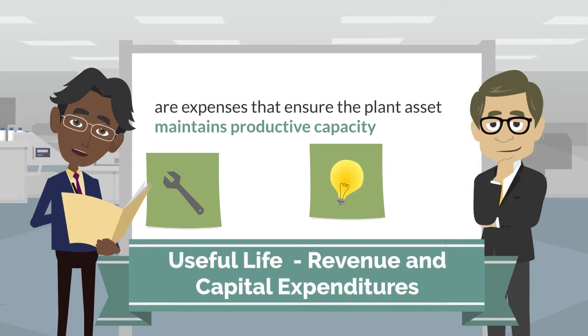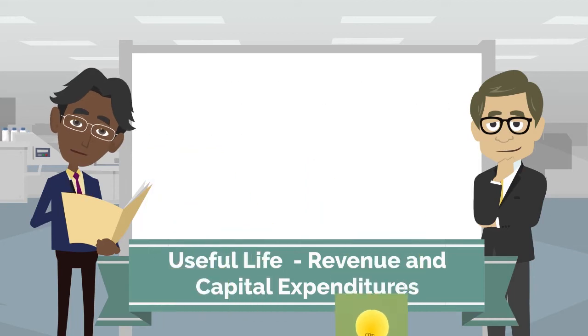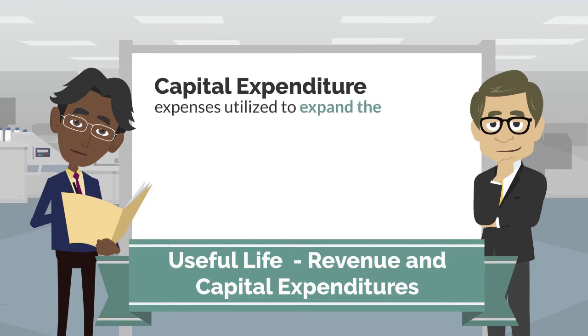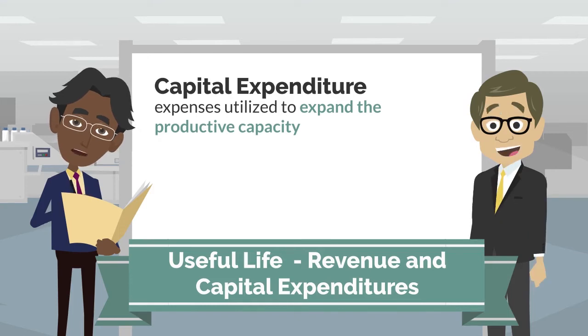The second type of expenditure that may be incurred during an asset's useful life is a capital expenditure, which are expenses utilized to expand the productive capacity. These expenses are made on improvements that extend the useful life, therefore are directly recorded to the plant asset account, debiting plant asset and crediting cash.